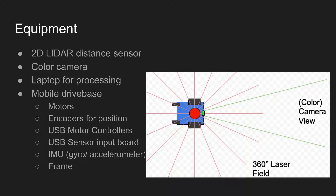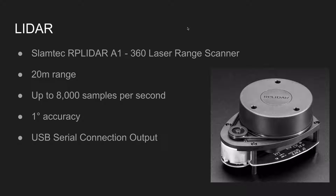Additionally, there will be an IMU with a gyro and accelerometer for measuring the current heading. You can see here that the LiDAR sensor is detecting a 360-degree field of distances as well as the camera looking forward. The LiDAR I'll be using is the SLAMTEC RP LiDAR A1, which measures 360 degrees with up to 20-meter range and up to 8,000 samples per second, with one degree of accuracy, communicating to the laptop over USB serial connection.